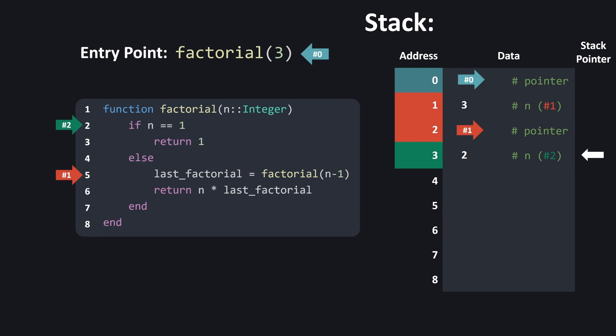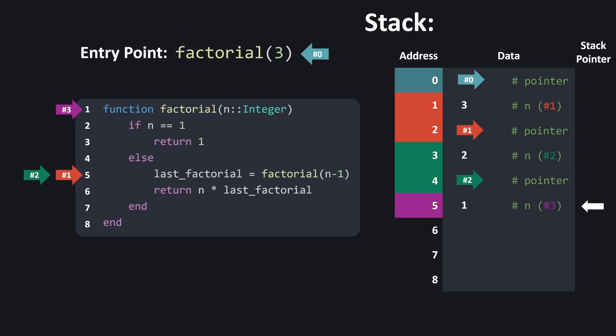We evaluate the condition again with n equals 2. Since it still returns false, we jump to line 5 again and follow the same process: push the instruction pointer onto the stack, evaluate n minus 1 inside the CPU registers, and push the input argument n equals 1 onto the stack, updating the stack pointer throughout. Finally, on this round, the condition n == 1 evaluates to true.